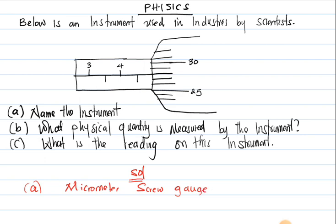So a micrometer screw gauge is an instrument which is used to measure the diameters or radius of very tiny objects, or in short, I can say the thickness of tiny objects. For example, if I want to measure the thickness of paper or the thickness of a very thin wire or the thickness of your hair, you can use a micrometer screw gauge.